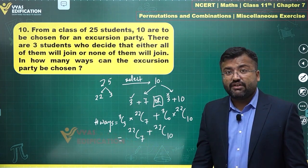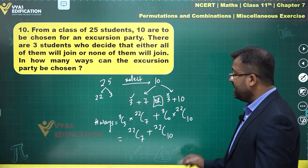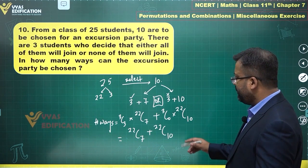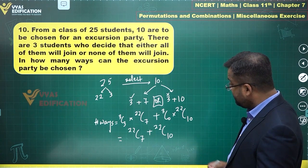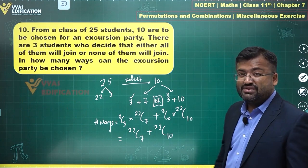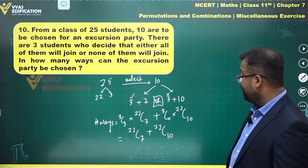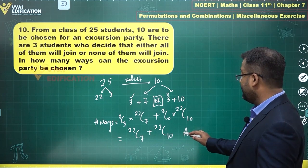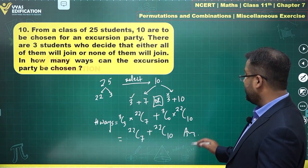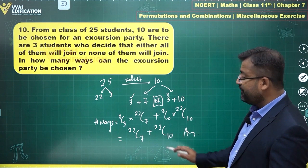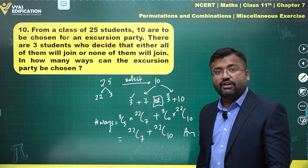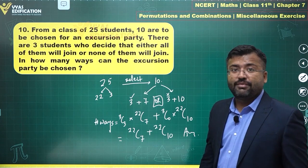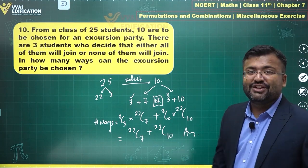So the total number of ways is 22C7 + 22C10. We will not calculate this further as 22C10 would be very large. We'll leave the answer at this stage — if you want, you can calculate this value on your own. That's the answer for this question.